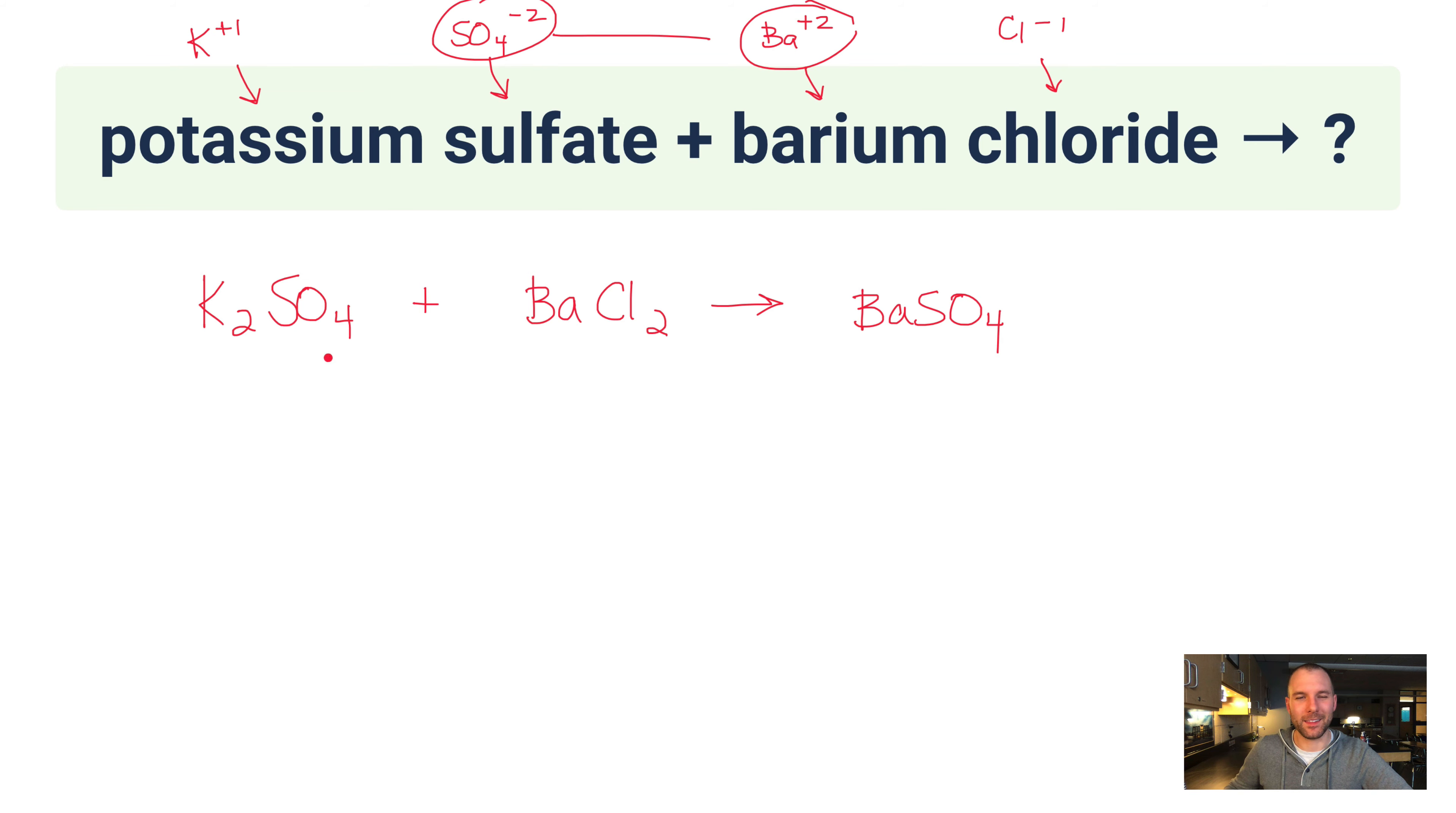Now again, if you're looking at this, we just have one of each on the left side, and that's good. So this already so far is balanced. But what is the formula for potassium chloride? Well, that's not going to be K2Cl2. It's just going to be KCl, because they just have a +1 and a -1 charge, so you just need one of each.